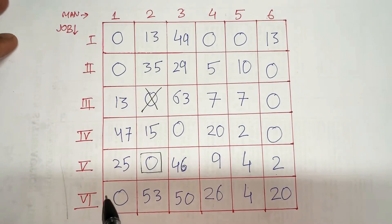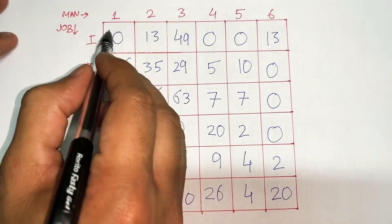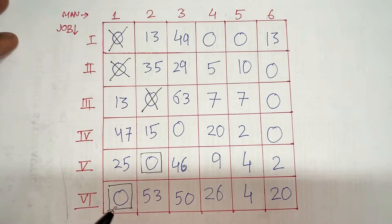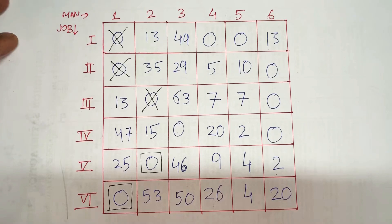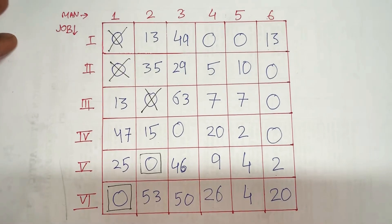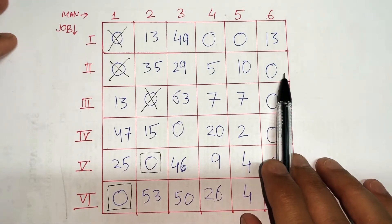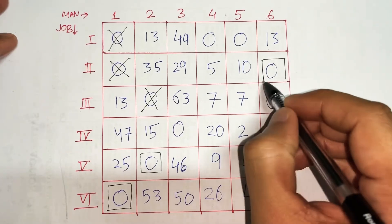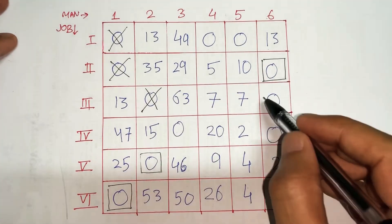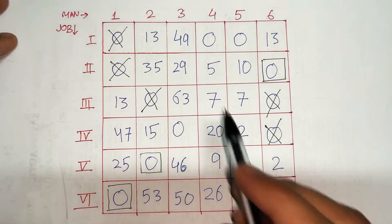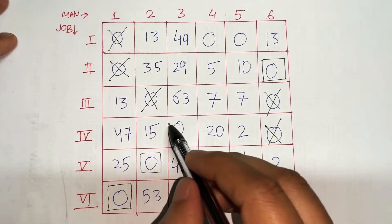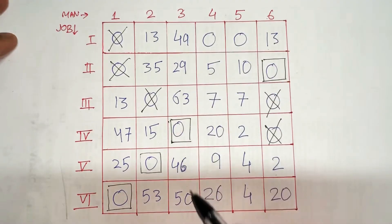I find another row with exactly one zero, so I make an assignment there and cross any corresponding zeros in the column. This means the fourth job has been assigned to the first man, so he cannot take any other job. When an assignment is done, that particular row and column are considered complete. I continue searching — I find another row with one zero and assign it, then find a column with exactly one zero and assign that too.